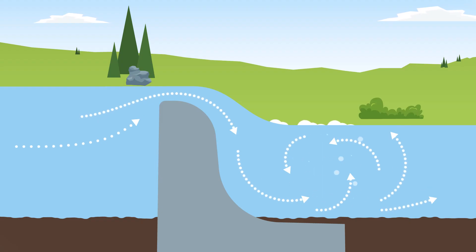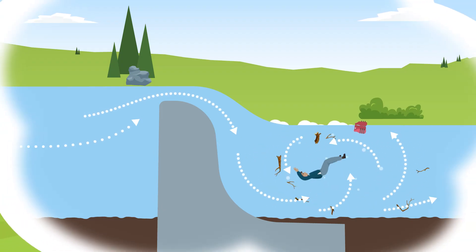Air gets sucked into the current too, making the water less dense and objects less buoyant. That means anything caught in the current is often unable to float to the surface or escape.